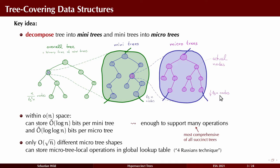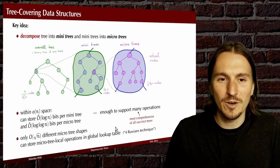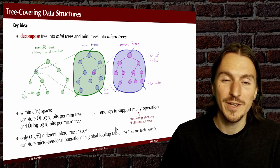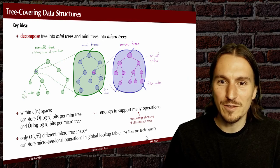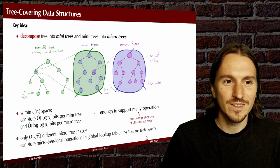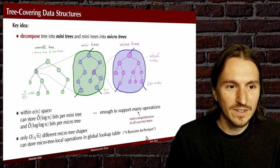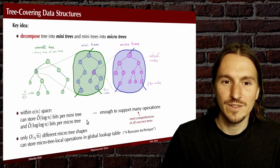Because the micro trees are so small, there's only log n over four of those nodes in each micro tree. There's only root n different shapes that you can possibly have in a micro tree. And that means you can just list them all and even spell out all the results for all thinkable operations inside a micro tree in a giant global lookup table. That's known as the four Russians technique in the data structures area. And that's what makes tree covering work on the micro tree side and the other parts piece it together between micro trees and the other parts.